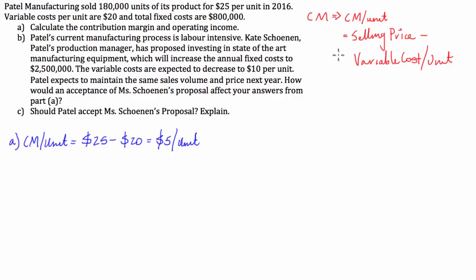But we're asked to find the total contribution margin. So to get the total contribution margin, we just get the contribution margin per unit and times it by the number of units that the company sells. So the contribution margin total is going to be equal to $5 times the volume, which is 180,000. And that gives us a contribution of $900,000.